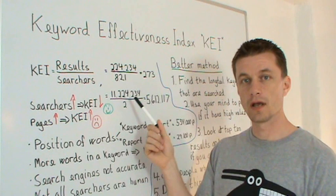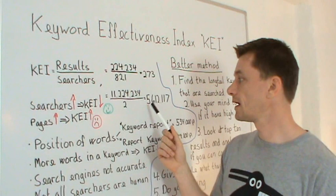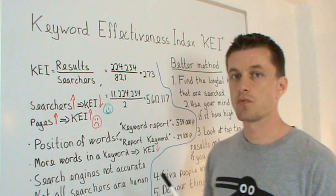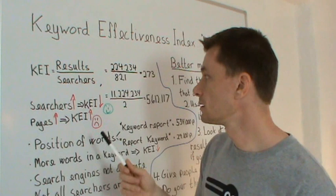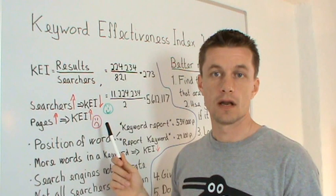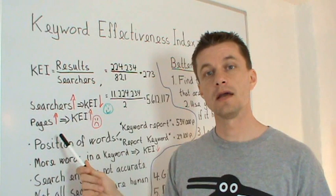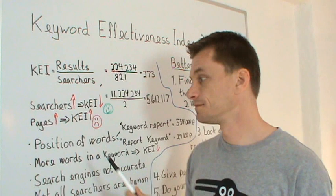Let's look at more realistic numbers for KEI — something like 11 million results and 2 searches globally, giving you a KEI of around 5,600,000. If we increase the number of searches, the KEI will fall, and we like that because a low KEI means fewer pages competing for each searcher. If the number of pages increases, the KEI increases as well, and we don't like that — it means more pages competing for the same searches.